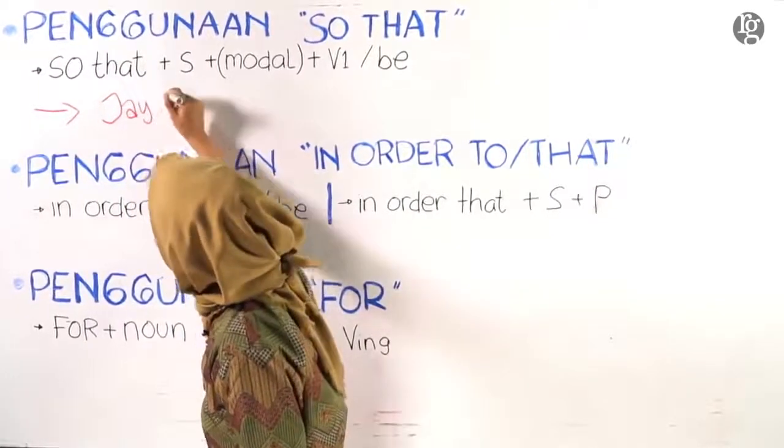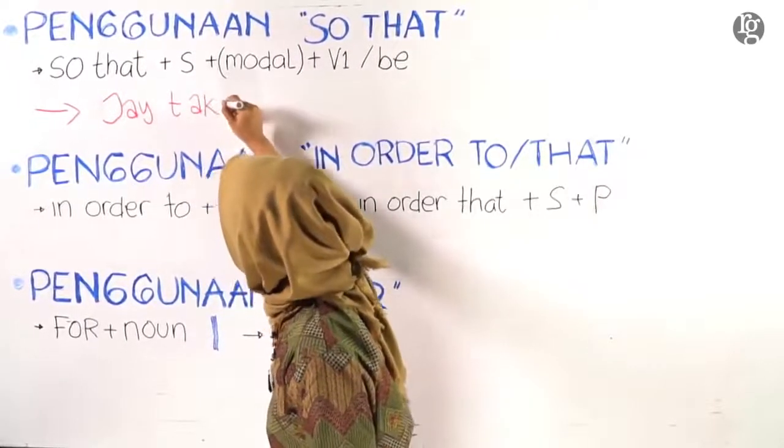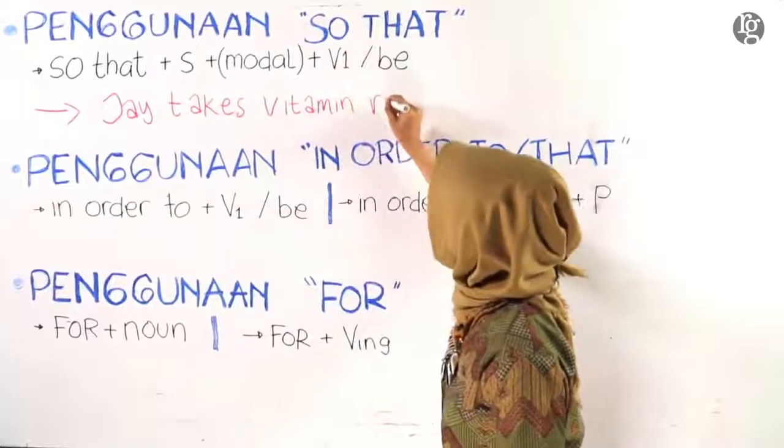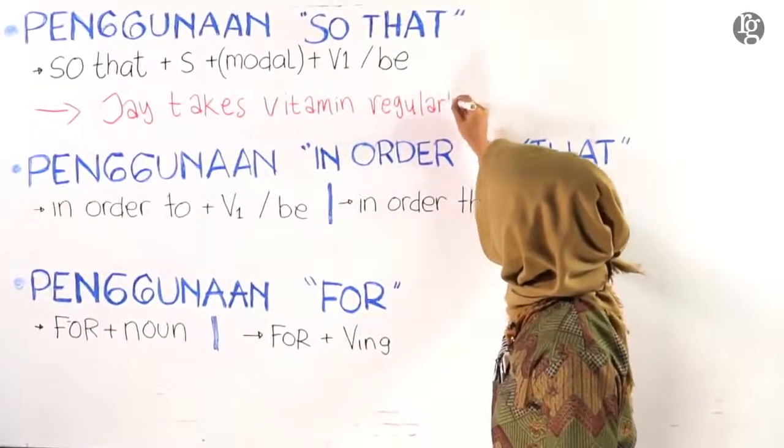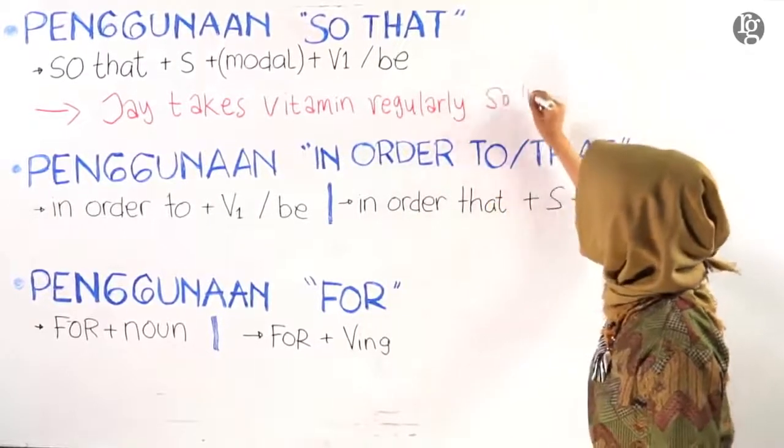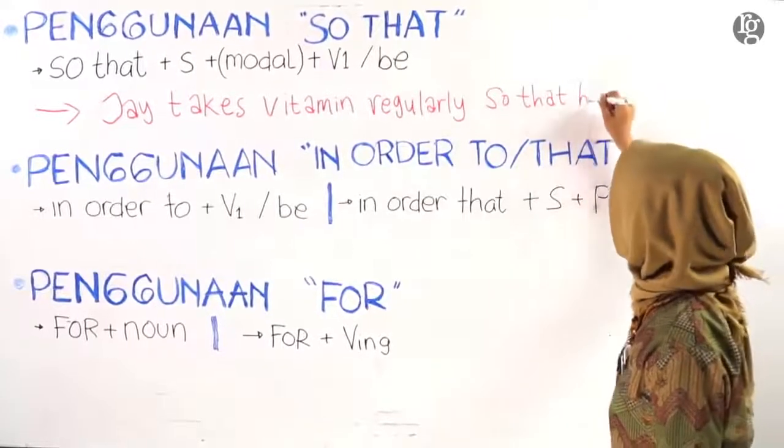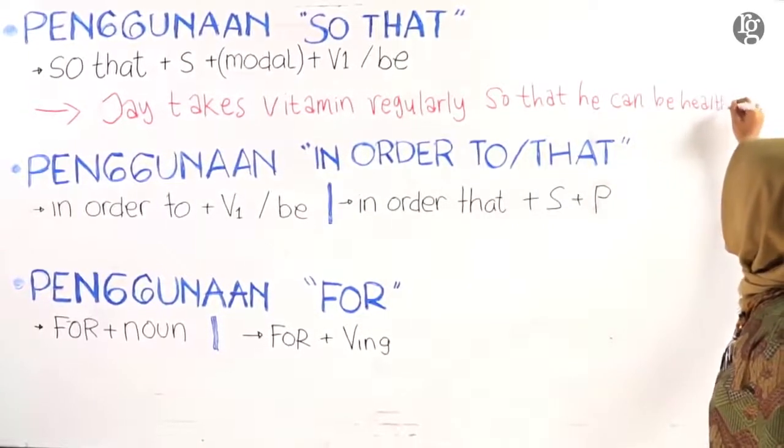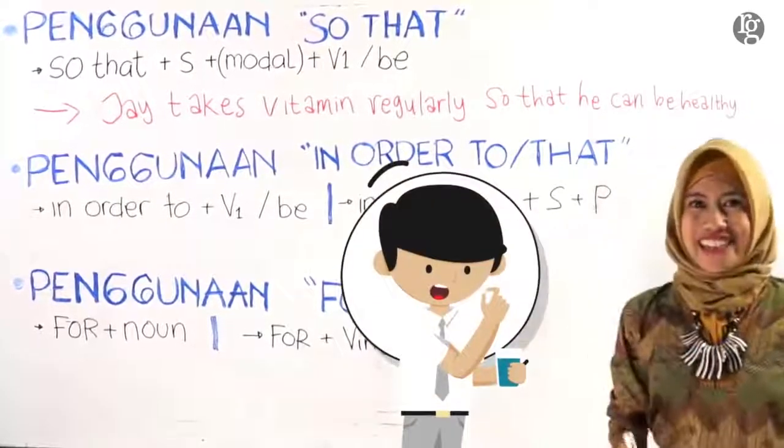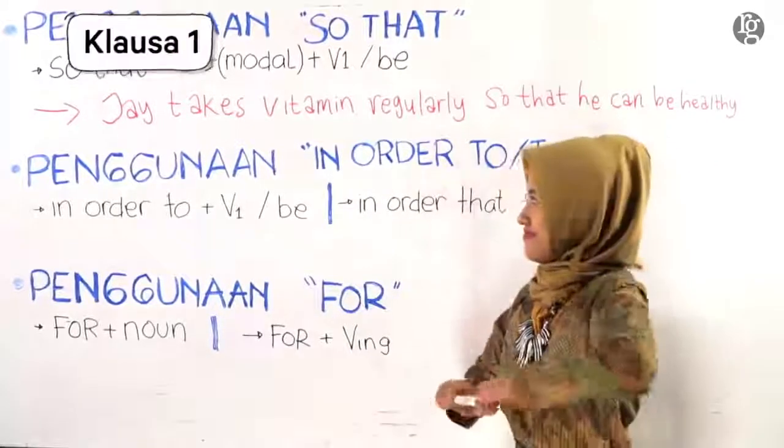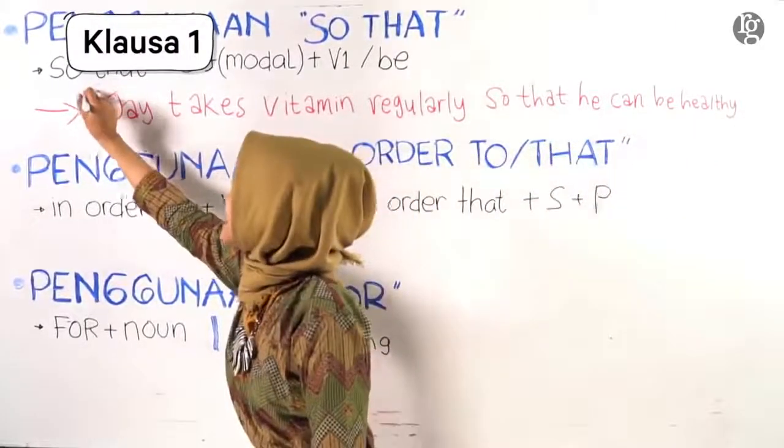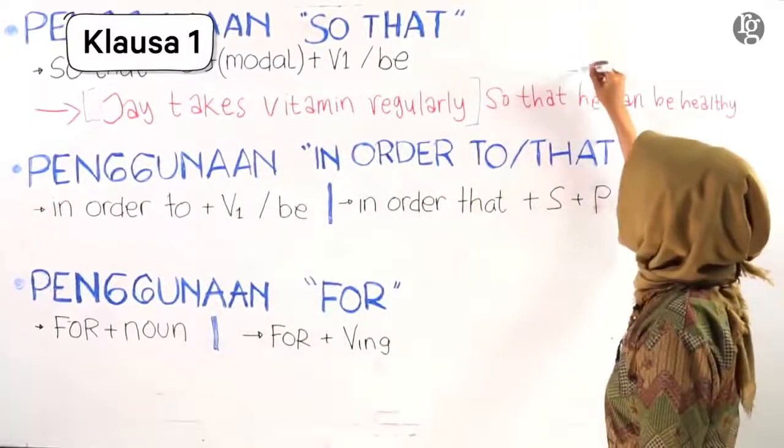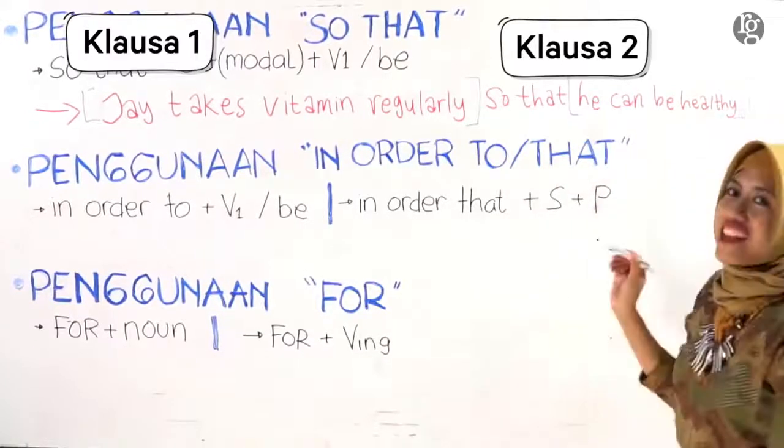Contohnya adalah: Jai takes vitamin regularly so that he can be healthy. Nah yang dimaksud dengan dua klausa adalah klausa pertama yang kakak mulai dari Jai sampai ke regularly. Klausa selanjutnya dari 'he' hingga 'healthy'.